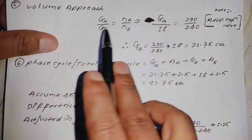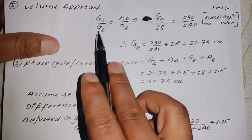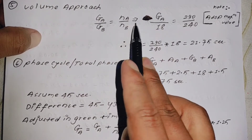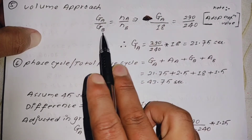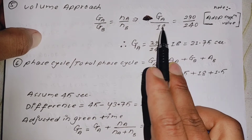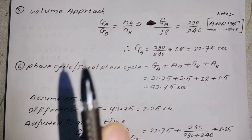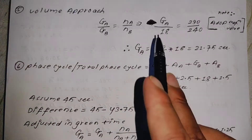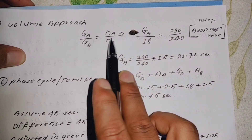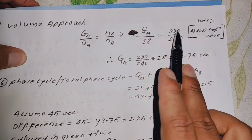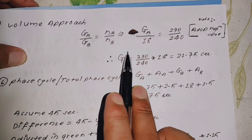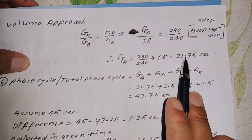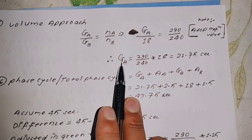Using the volume approach: G1/G2 = N1/N2. Green time Road A over green time Road B equals traffic count A over traffic count B. Green time B is 18 seconds, traffic count A is 290, traffic count B is 240. Solving gives green time Road A = 18 × (290/240) = 21.75 seconds.